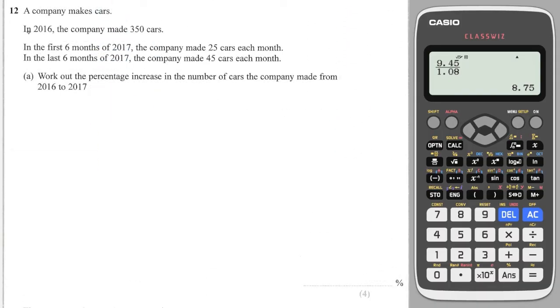Okay, a company makes cars. In 2016 the company made 350 cars. In the first six months the company made 25 cars each month. In the last six months the company made 45 cars each month. Work out the percentage increase in the number of cars that the company made from 2016 to 2017.